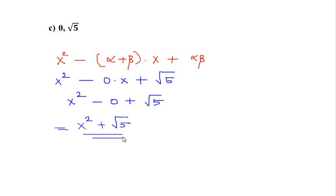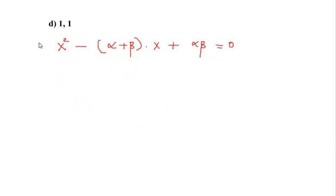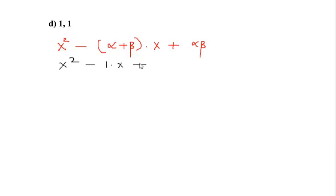For part D, the sum of the zeros is 1 and the product of the zeros is 1. Again no fractions, so we write x² - 1·x + 1, which simplifies to x² - x + 1.